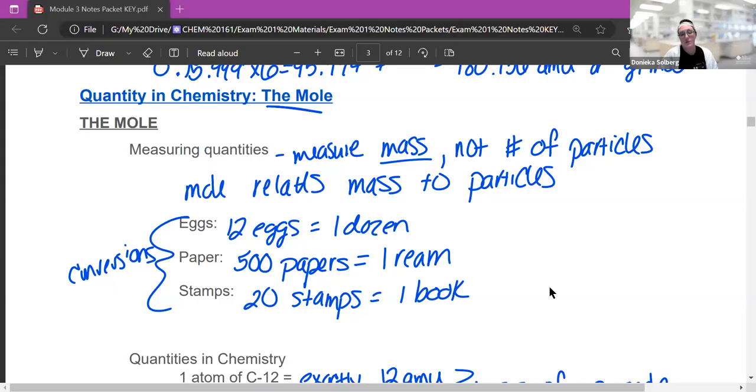So first of all, why do we need this thing called the mole? Well, it's for measuring quantities of things. I've got some examples down here: measuring the number of eggs that you have, you would go by dozens. The number of sheets of paper you have, you would go by reams because a ream is 500. Or stamps, you would go by books of stamps because that's 20 stamps.